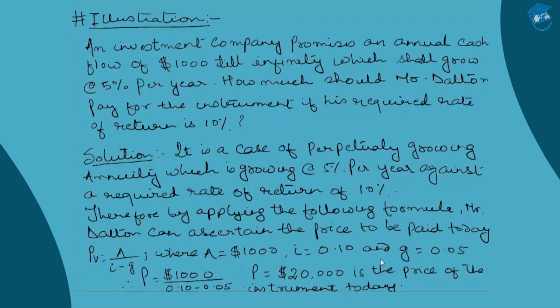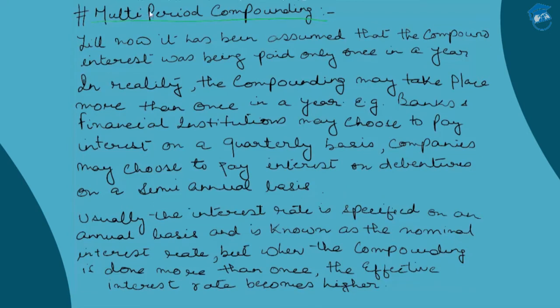Multi-period compounding refers to compounding done across multiple time periods. Until now, we have been assuming that compounding takes place once in a year. This simple assumption applied whether we were calculating the future value of a lump sum, an annuity, a growing annuity, or any stream of cash flows — even uneven ones. The assumption was that compounding was done once a year till n number of years.